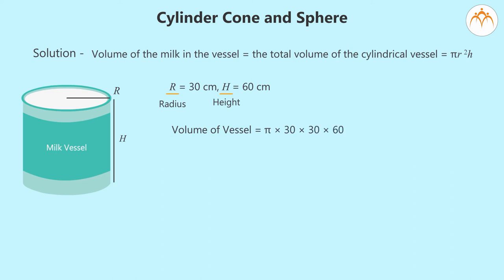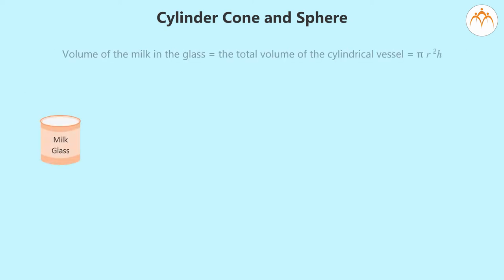Likewise, the volume of milk served by each glass equals πr²h where r is 3 cm and h is 6 cm. Here, r and h are the radius and height of cylindrical glass respectively. The volume of each glass equals π × 3 × 3 × 6.